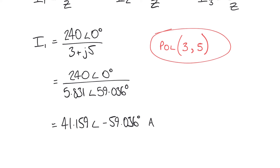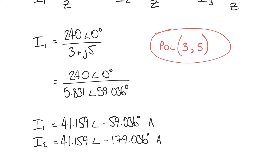We won't repeat the full method for the other currents — it's the same idea, just using minus 120 degrees and plus 120 degrees for V2 and V3 respectively. Following this same method, I2 = 41.159 at an angle of minus 179.036 degrees amps, and I3 = 41.159 at an angle of 60.964 degrees amps.